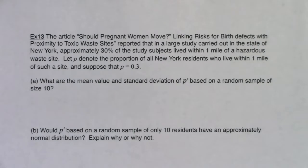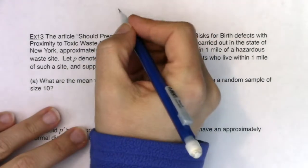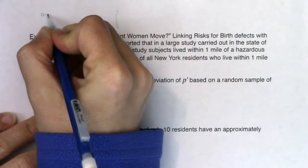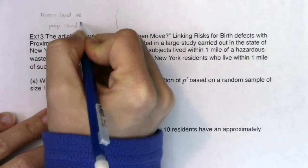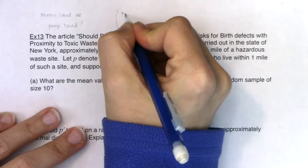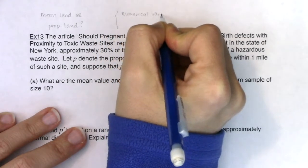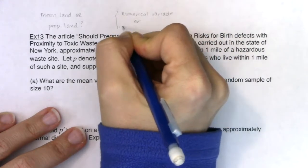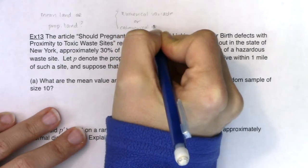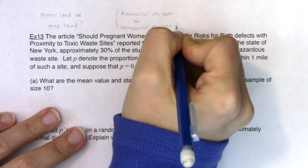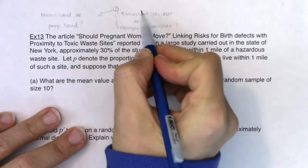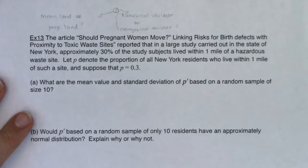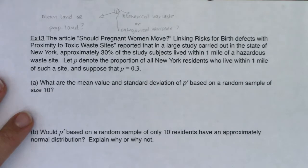All right, we've got another word problem and I want to attack this the same way we did example 12. The first question you should always ask yourself is: are we in mean land or proportion land? Alternatively, do I have a numerical variable or a categorical variable? Either version works — we're trying to figure out what land we're in.